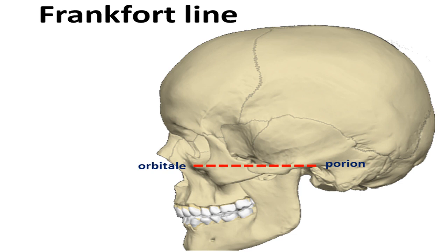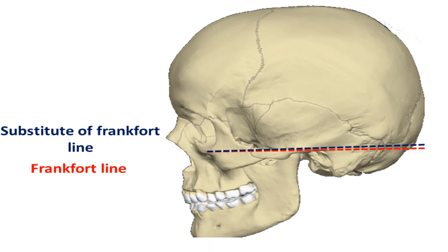The Frankfurt line is important also in anthropology and orthodontics. In some cases, the porion is difficult to be seen, such as in cases of squamous bone fracture. So there is a new study that mentioned a substitute for the Frankfurt line, called the orbito-occipital line, as it connects the orbitale to the inion. You can notice that there is a very little or even negligible difference between the two lines, so you can consider it a modification of the Frankfurt line.